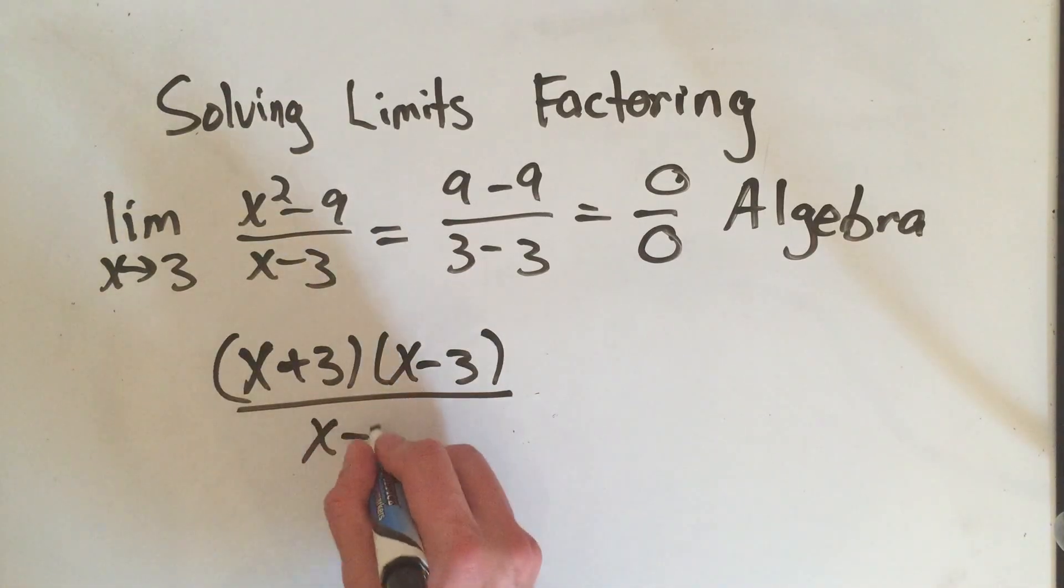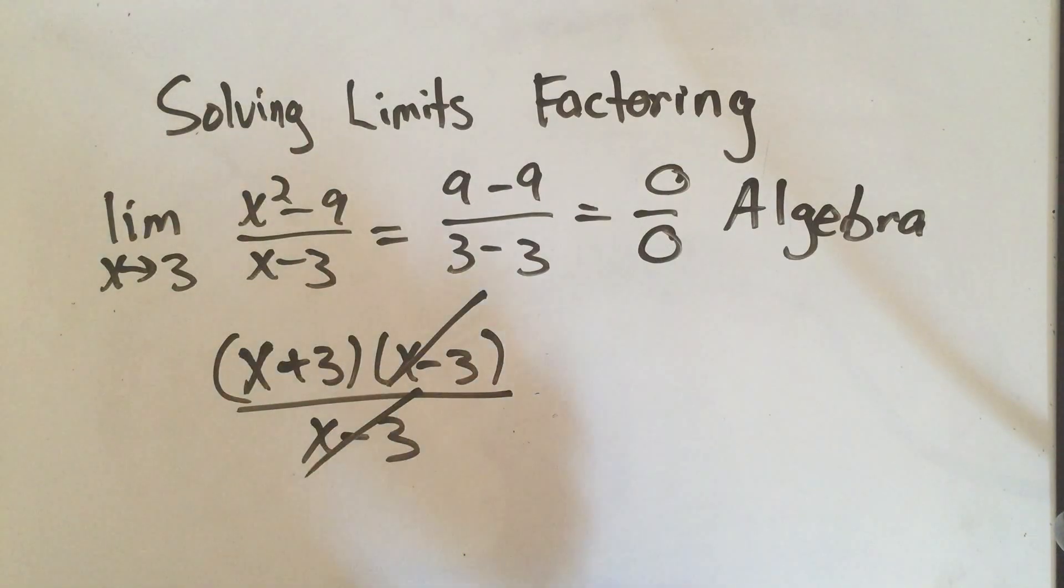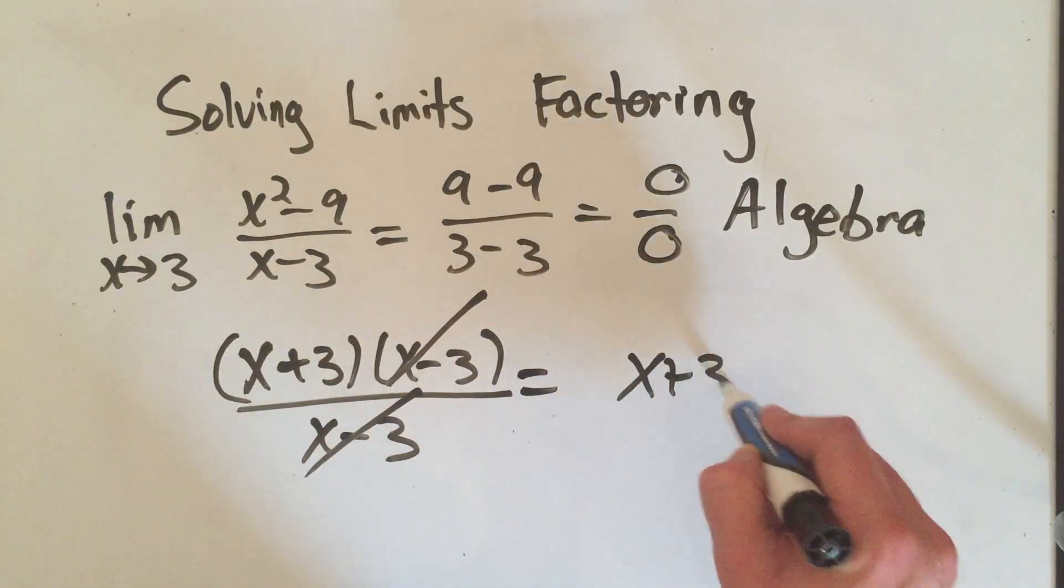And on the bottom we still have X minus 3. Hey, isn't that nice? X minus 3 over X minus 3 cancels. I'm left with just X plus 3.